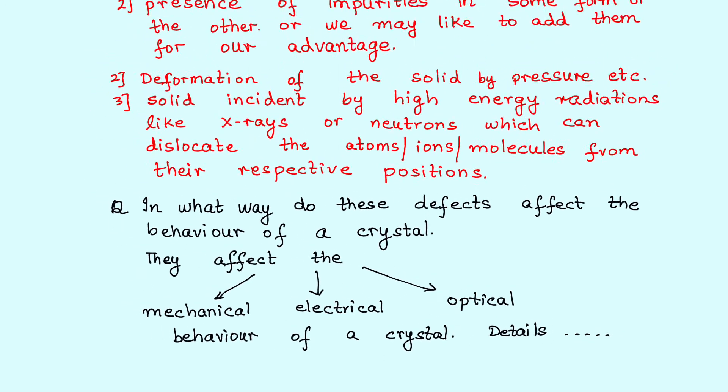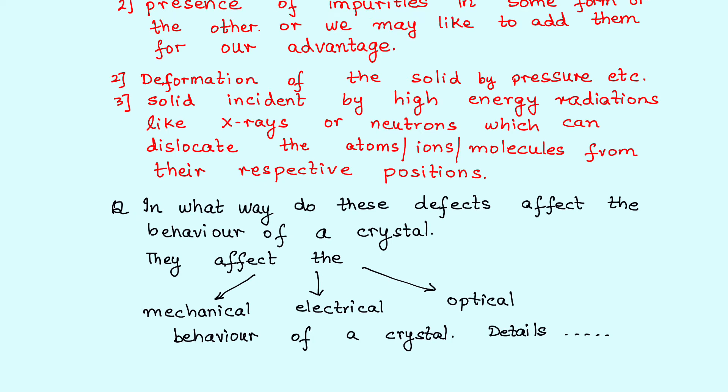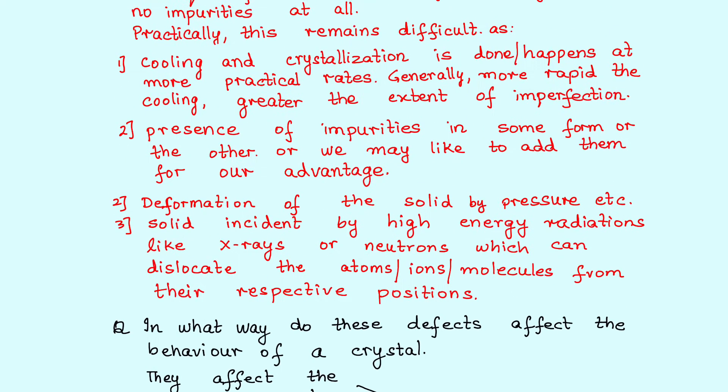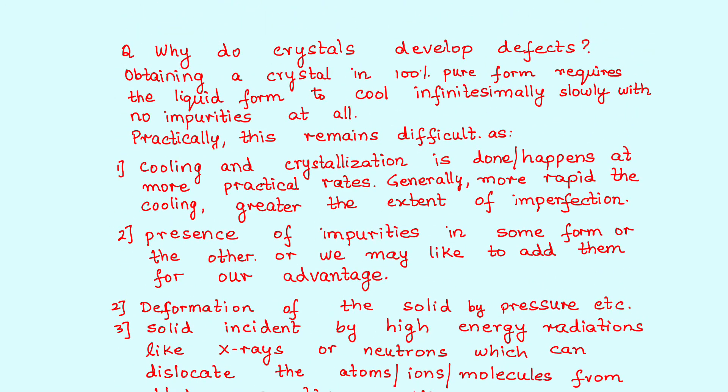As I mentioned earlier, these imperfections are required. What are the benefits? We get a lot of benefits. They affect the mechanical behavior. You know that steel doesn't rust as easily as iron does. Electrical behavior. Just now I mentioned about semiconductors. Optical behavior, right? So even the glasses that we use, the frames of the glasses that we use, they are made by introducing imperfections or defects in the crystals so that their fluidity is maintained. They do not break easily.